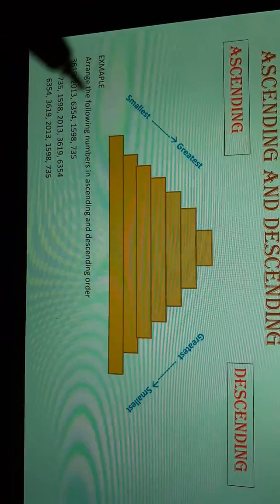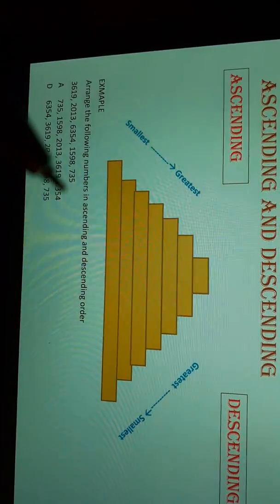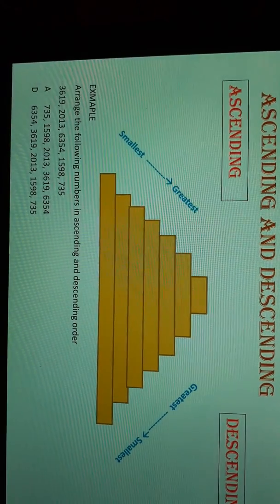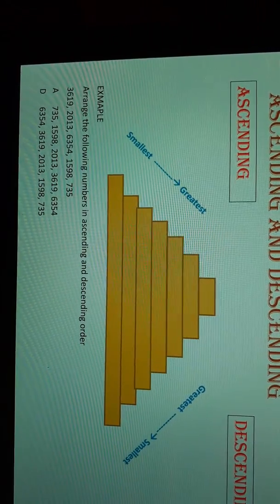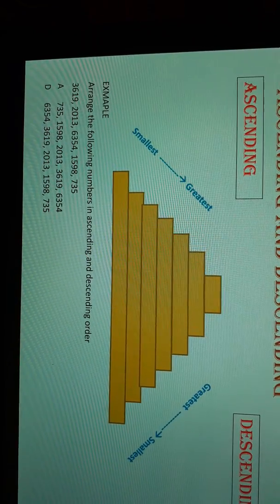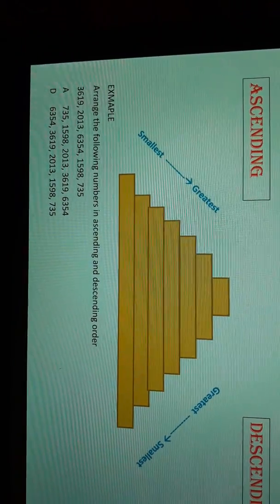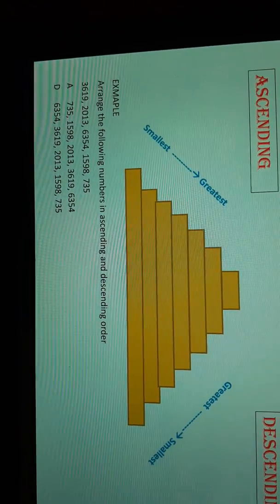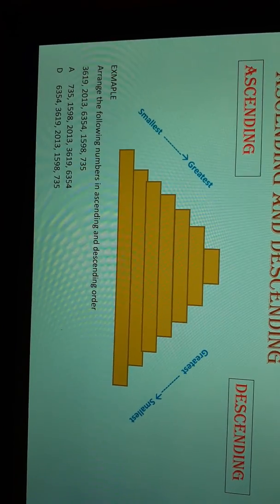There is an example: arrange the following numbers in ascending and descending order. There are five numbers — four are four-digit numbers and one is a three-digit number, 735. While writing in ascending order, we start with the smallest: 735, then 1598, then 2013, then 3619, and then 6354.